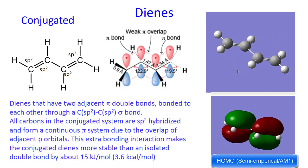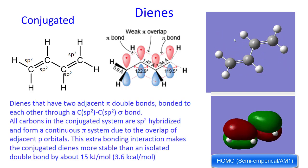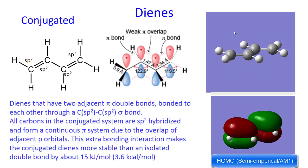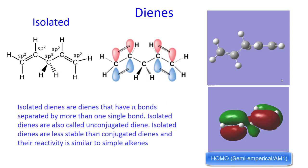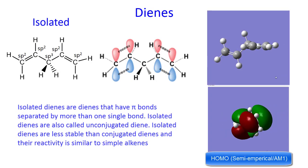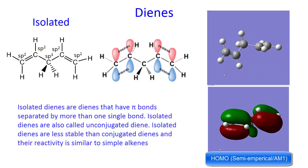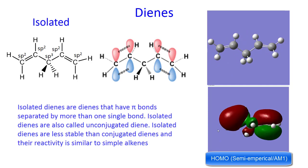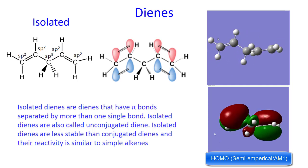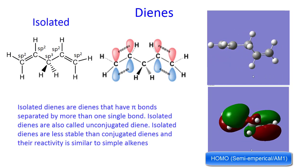This extra bonding interaction makes the conjugated diene more stable than an isolated double bond by about 15 kilojoules per mole. Isolated dienes are dienes that have pi bonds separated by more than one single bond. Isolated dienes are also called unconjugated dienes. Isolated dienes are less stable than conjugated dienes and their reactivity is very similar to simple alkenes.